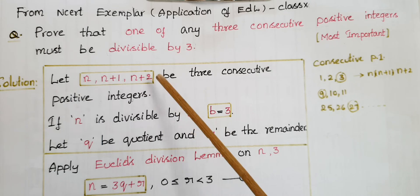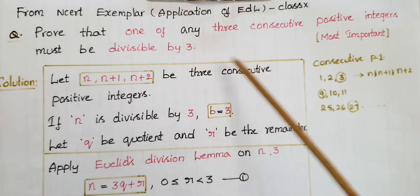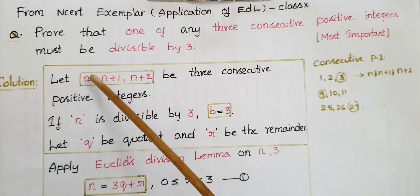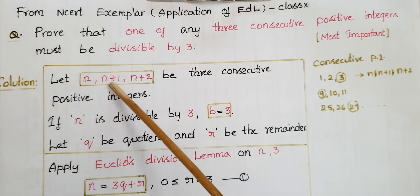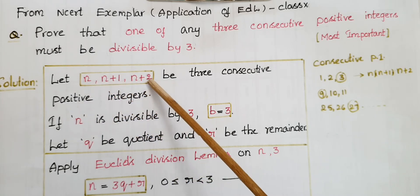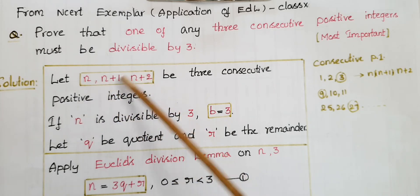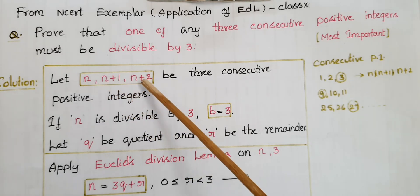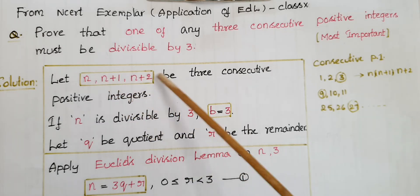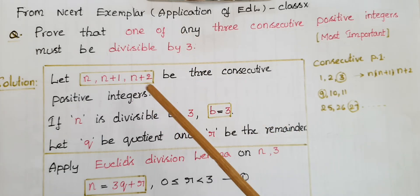Let n, n+1, n+2 be three consecutive positive integers. For example, if n is equal to 3, then n+1 is 4 and n+2 is 5, so 3, 4, 5 are consecutive positive integers. We assume n, n+1, n+2 to be three consecutive positive integers.